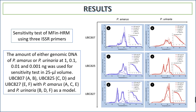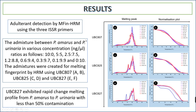For the sensitivity test of MFin-HRM, we crossed P. amarus and P. urinaria using three primers: UBC807, UBC825, and UBC827. In a 25 µL volume reaction, UBC825 showed higher sensitivity than UBC827 and UBC807.